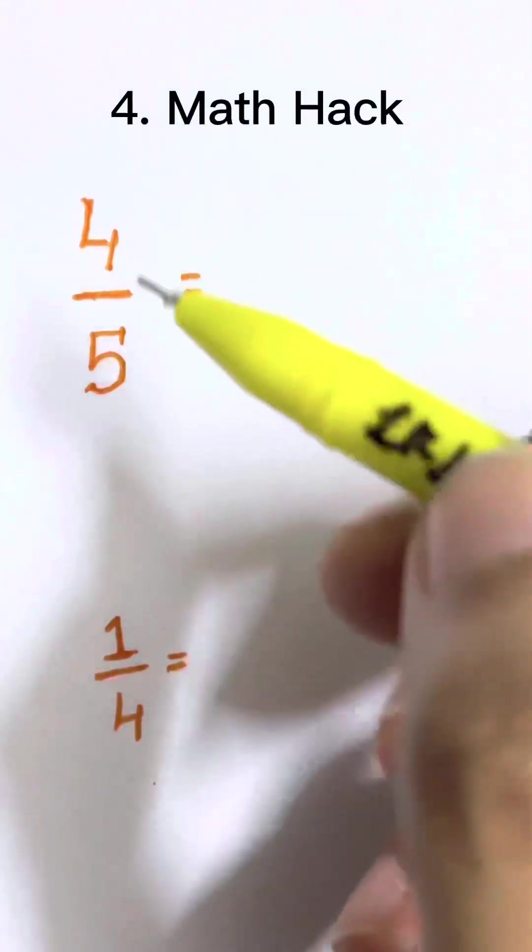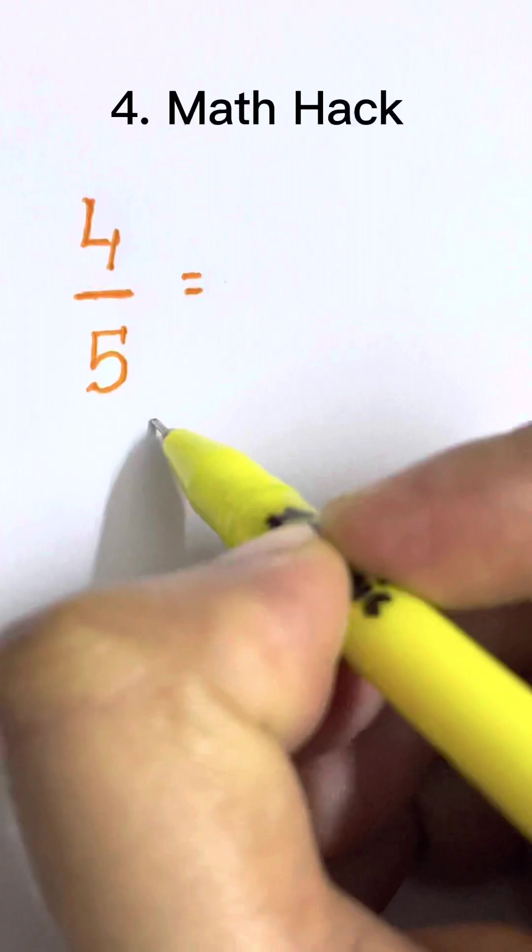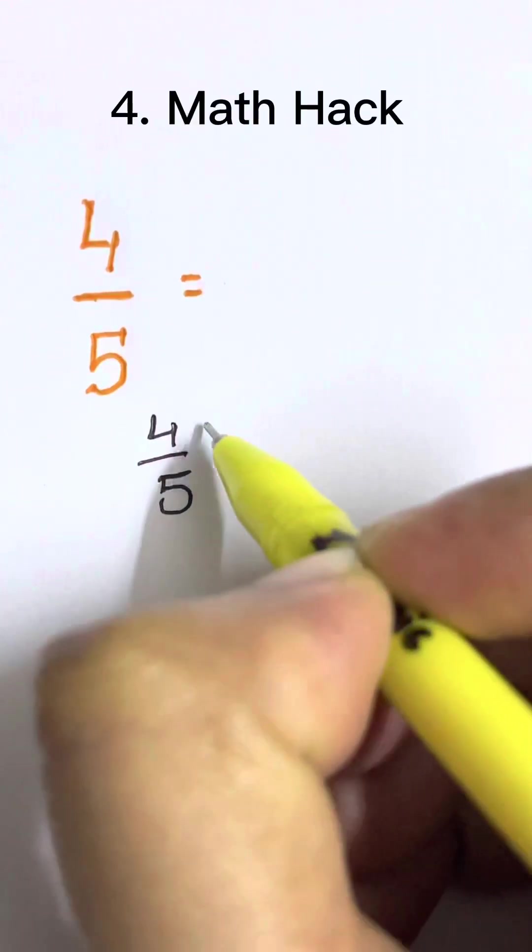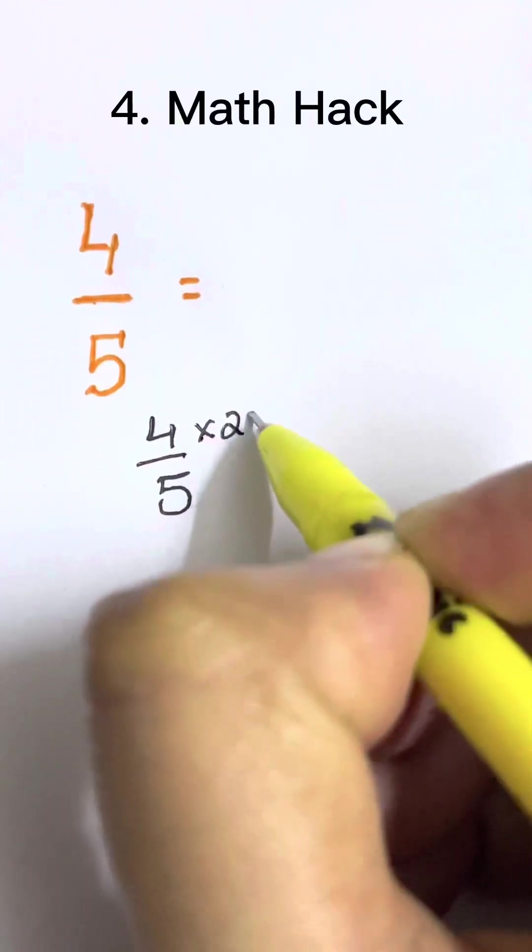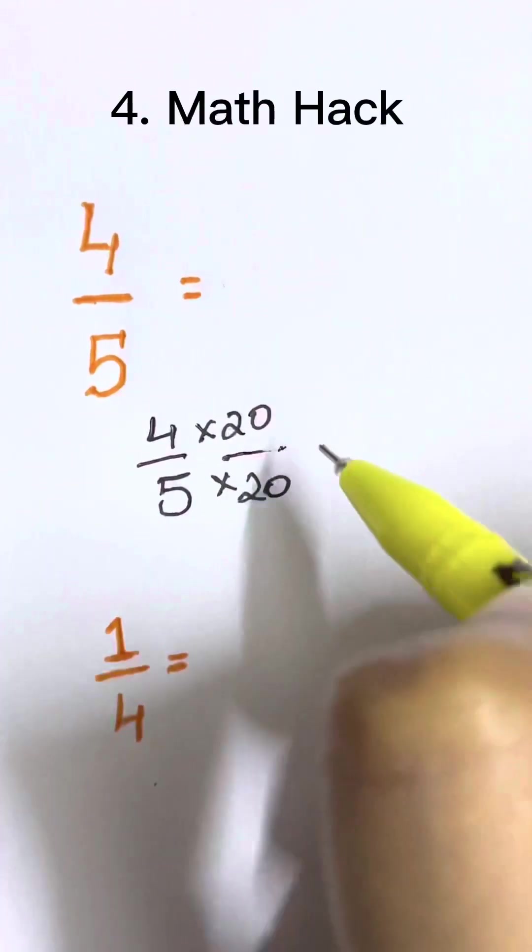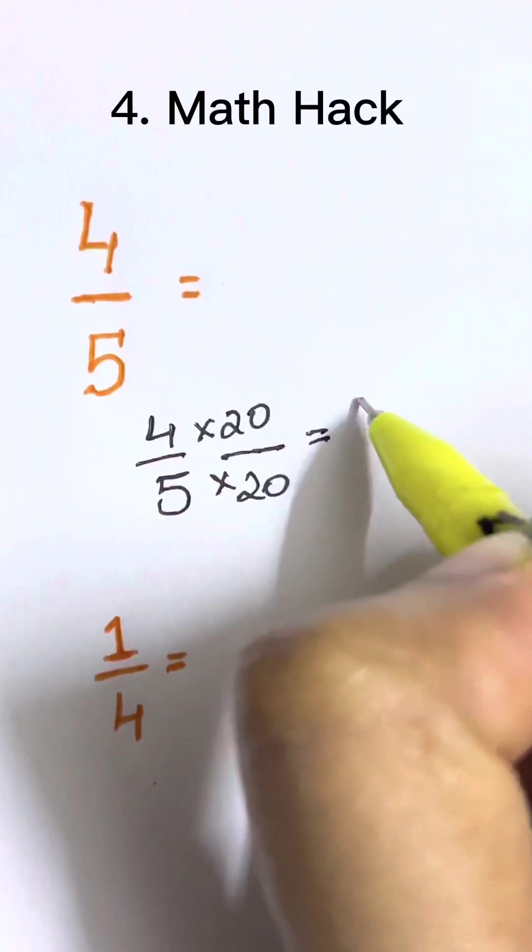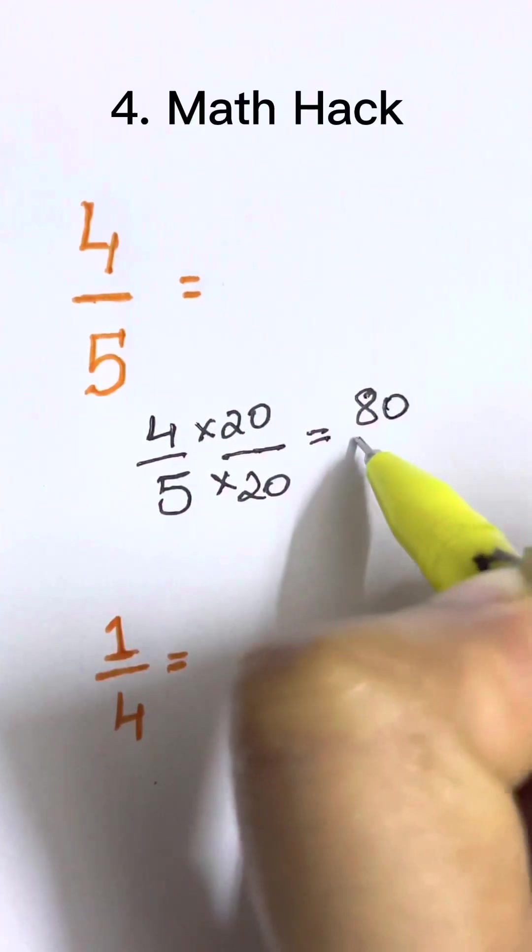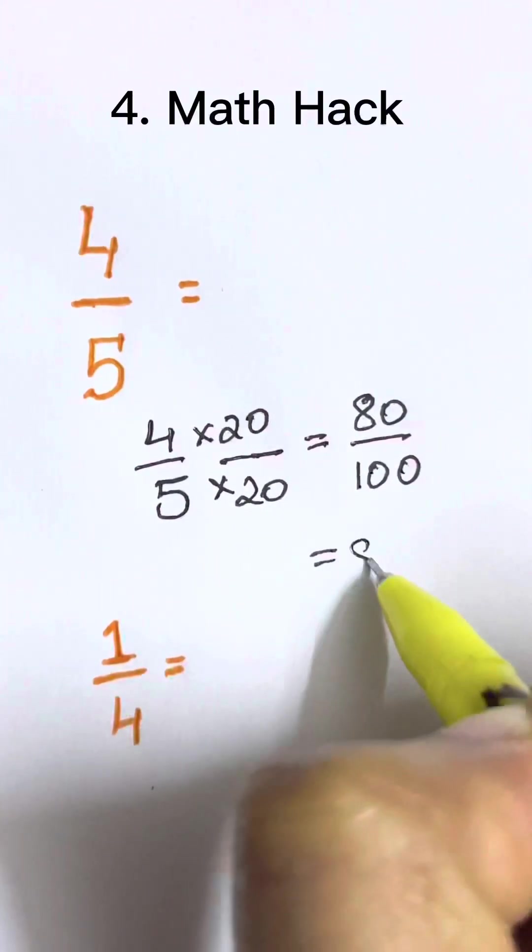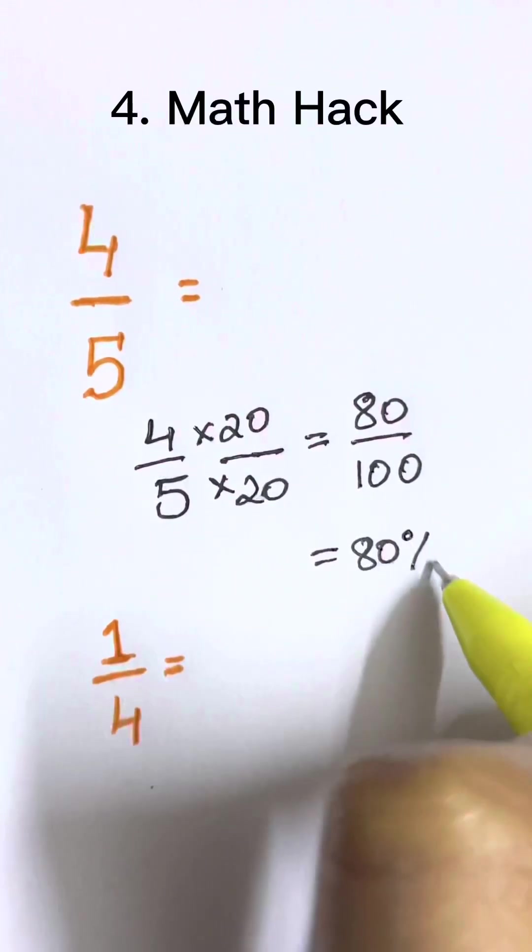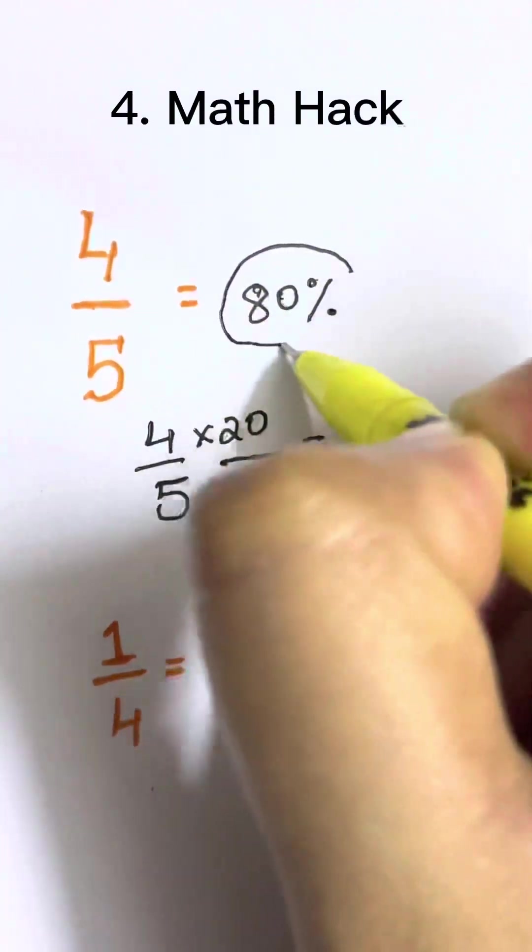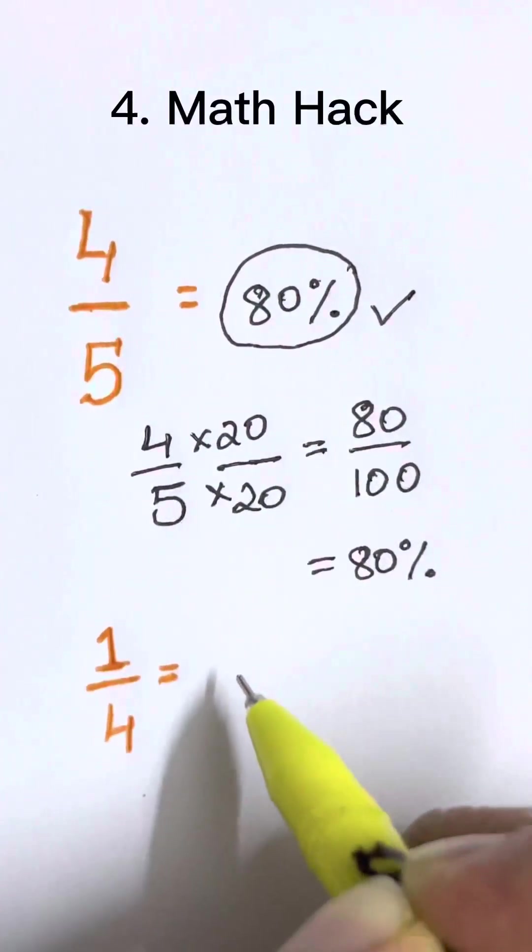To convert a fraction to a percentage, we make the denominator equal to 100. We multiply 5 with a number to make it 100. 5 times 20. We multiply the same thing with the numerator. That's 4 times 20. So 4 times 20 gives us 80, and 5 times 20 gives us 100. That's 80%. So 4 over 5 as a percentage is 80%. What is 1/4 as a percentage?